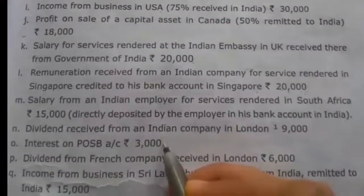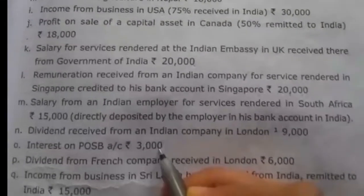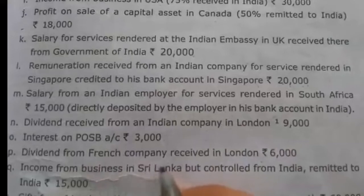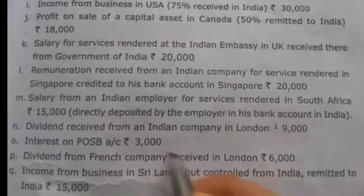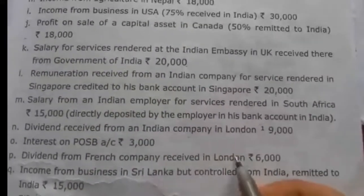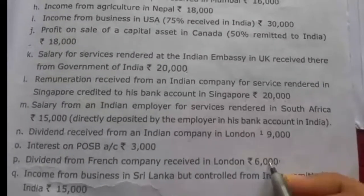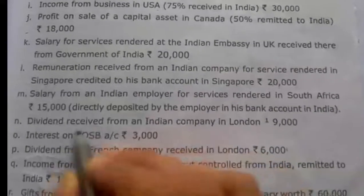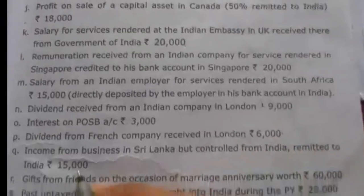Fifteenth, interest on POSB (Post Office Savings Bank) account Rs. 3,000 — up to Rs. 3,500 is exempt, so Rs. 3,000 is exempt. Sixteenth, dividend from French company received in London Rs. 6,000 — this is a foreign company dividend, which is foreign income taxable only in the hands of the ordinarily resident. Indian company dividends are exempt, but foreign company dividends are taxable for ordinarily resident.